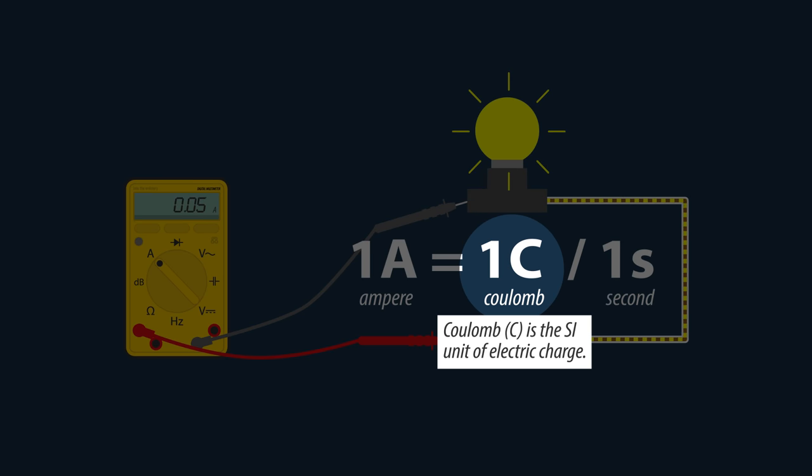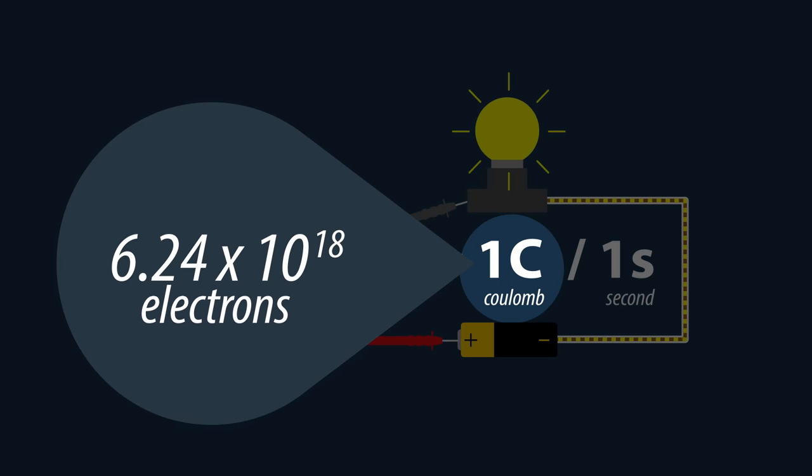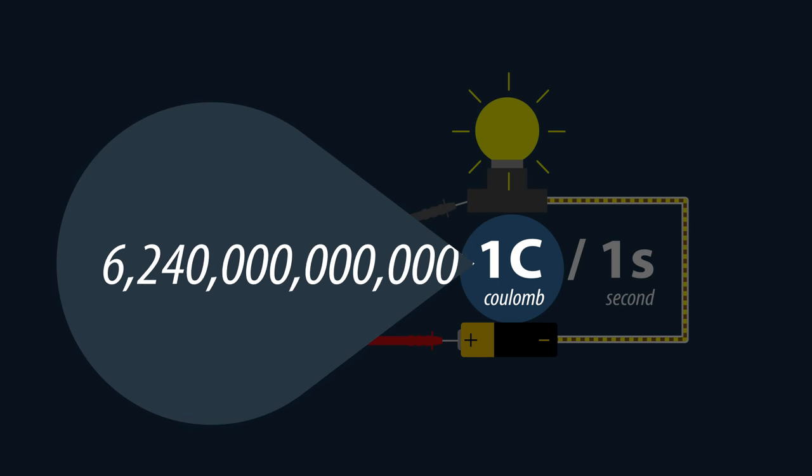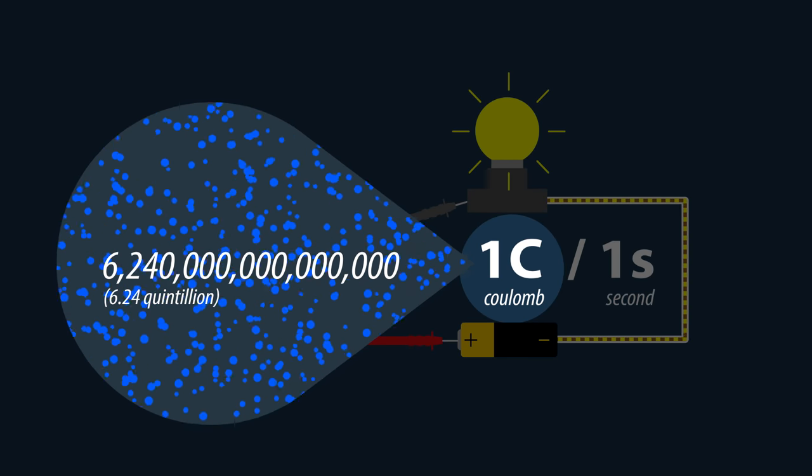1 coulomb is the unit of electric charge, which is carried by approximately 6.24 times 10 to the power of 18 electrons. That's 6.24 quintillion electrons flowing past a certain point every second.